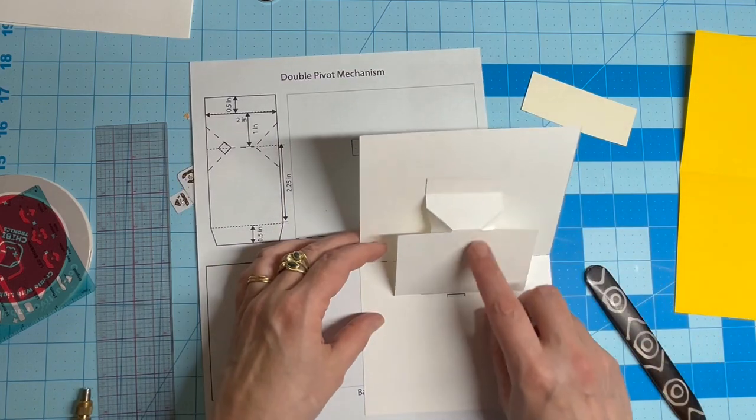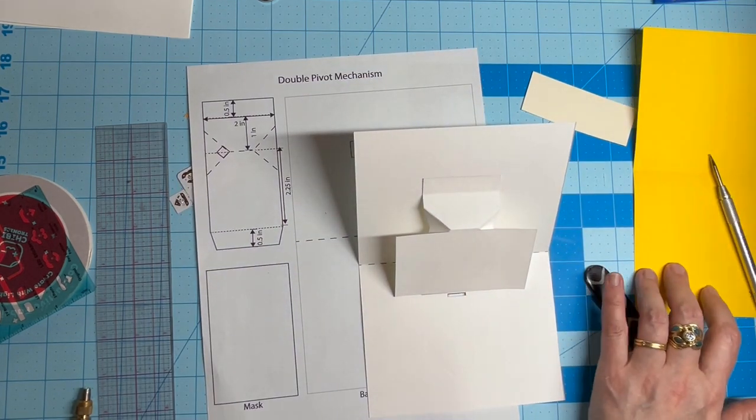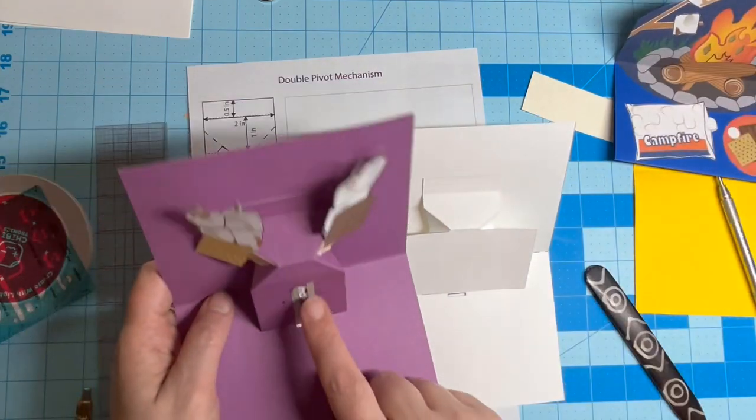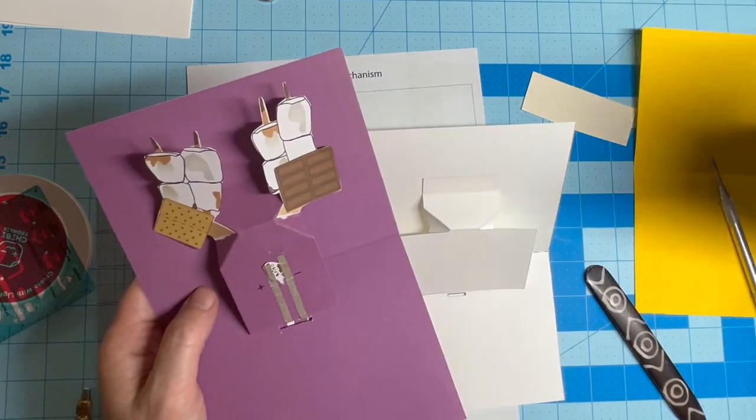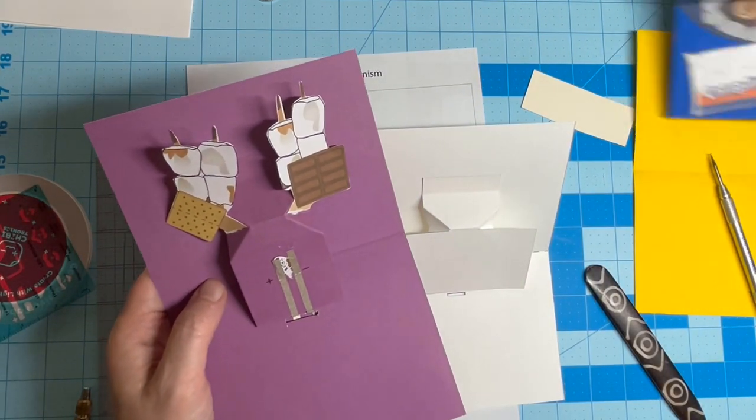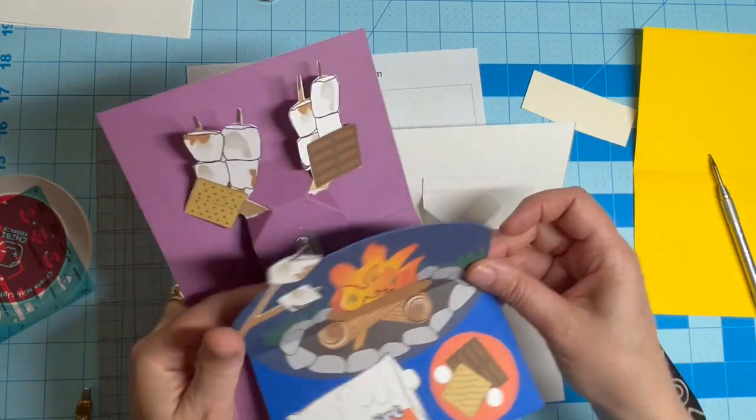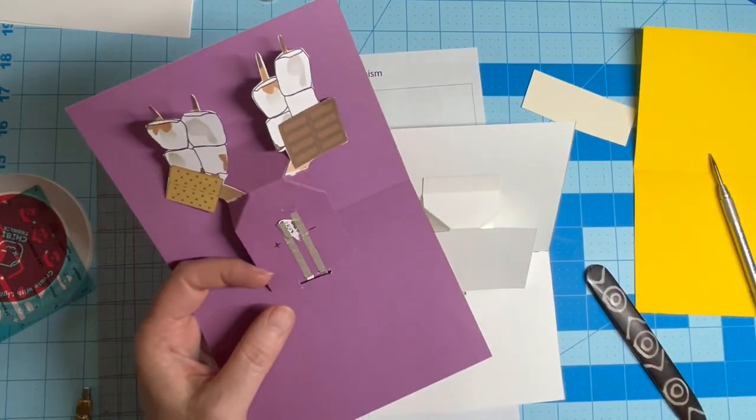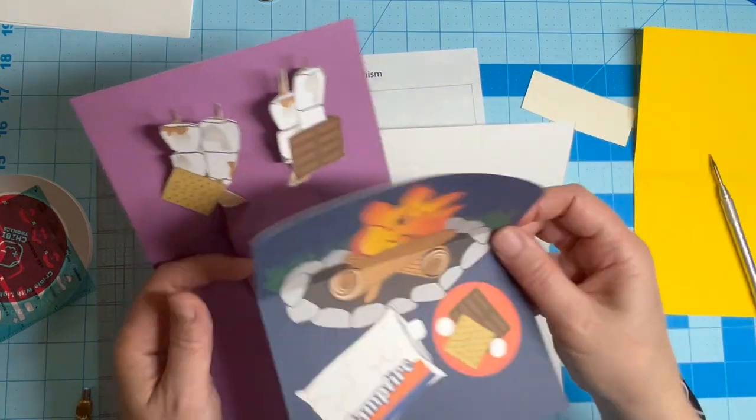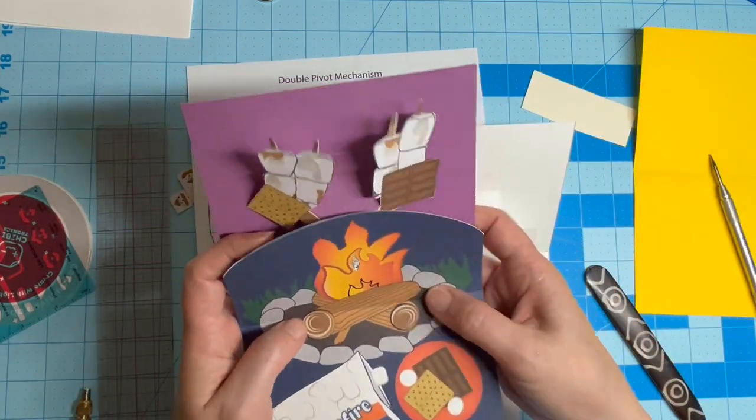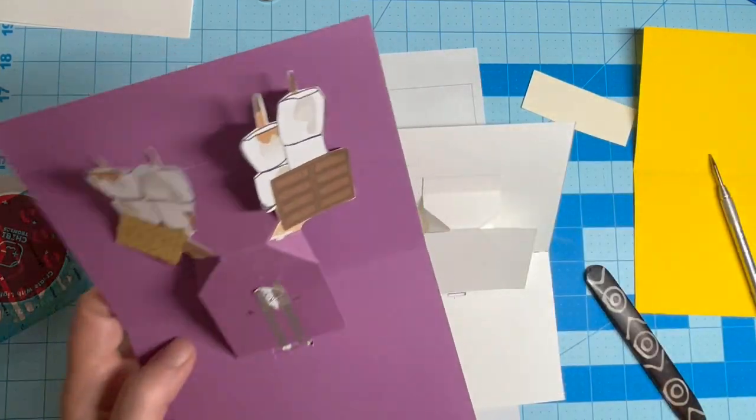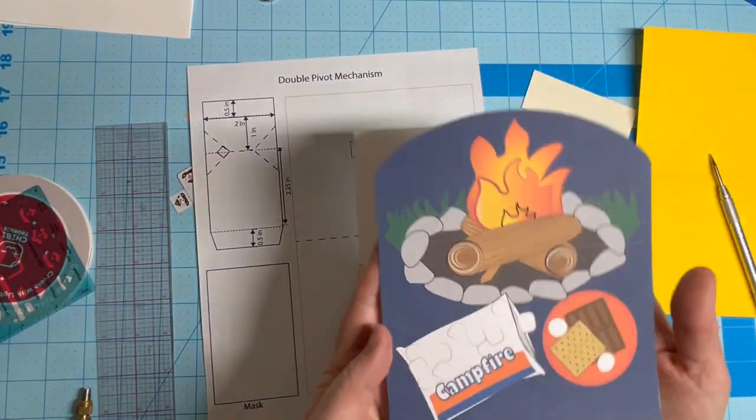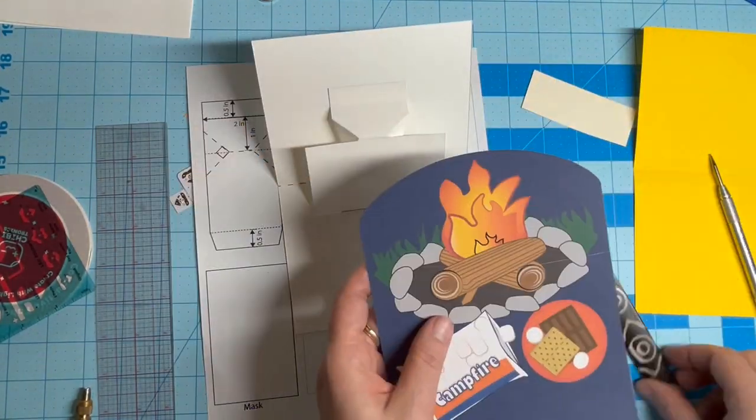We are going to be building a simple circuit with a single LED in the center of the mask. Since I know that I want the LED to shine in a certain place in my campfire scene, I'm using the piece to find the correct placement.